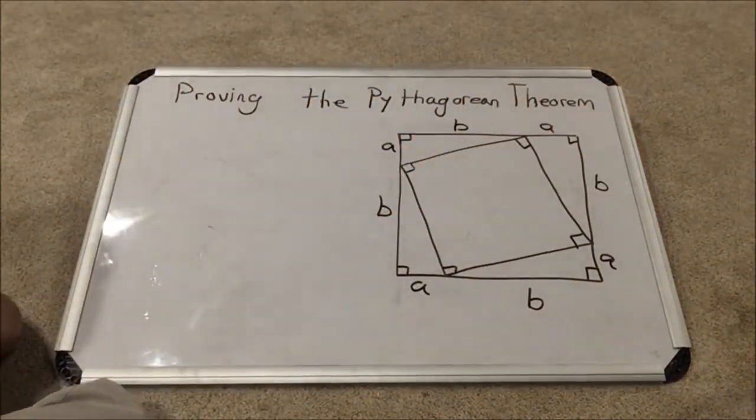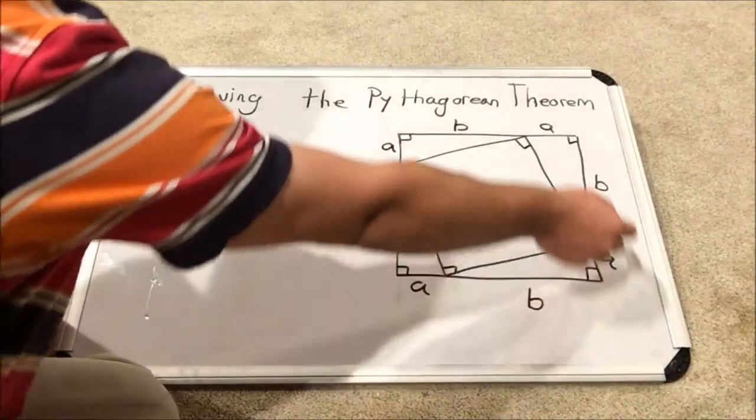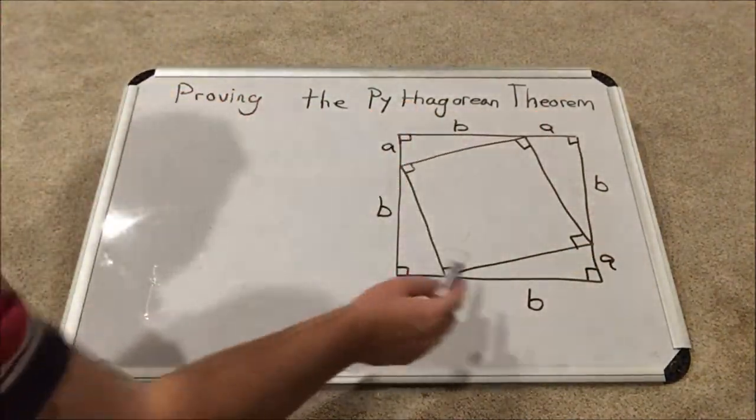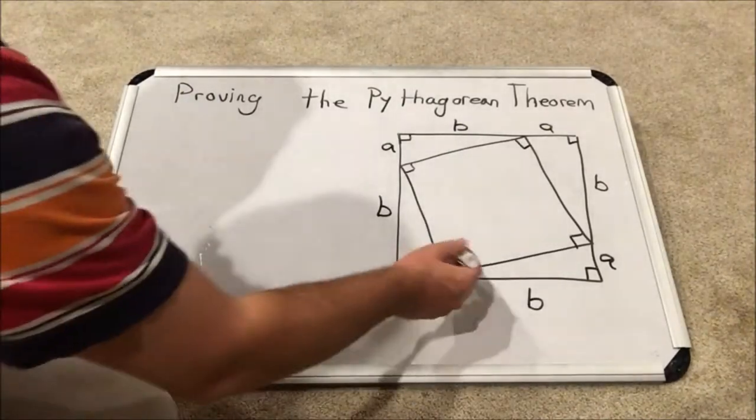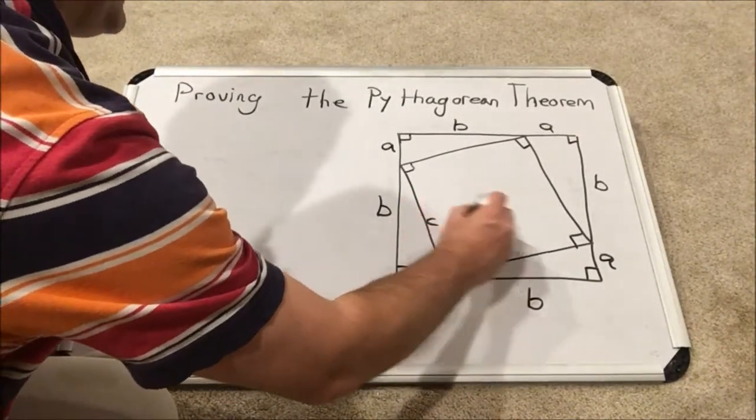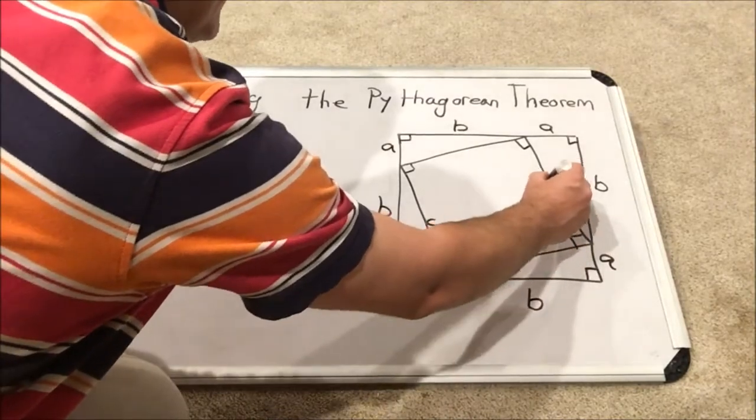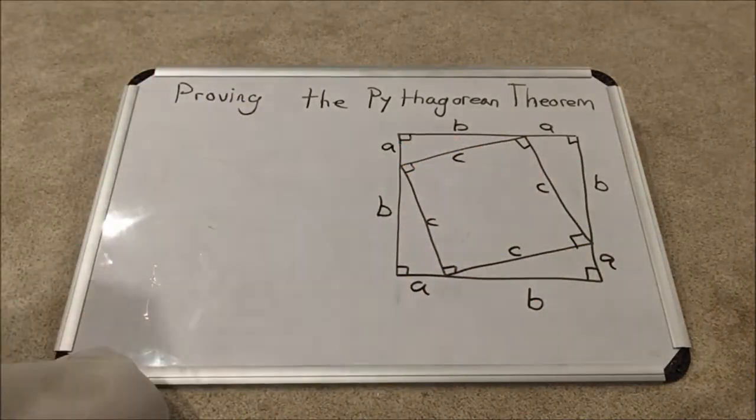As you can see I've also just finished naming the sides of the larger square. So each side of the larger square is A plus B. Now the inner square, I'm going to say that all of its sides are C, as they should be. Because it's a square, they should all be the same.